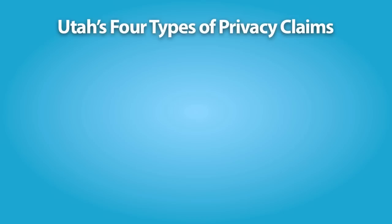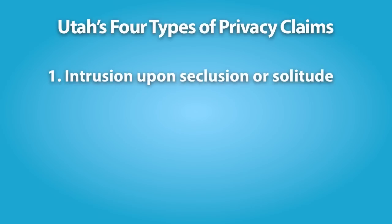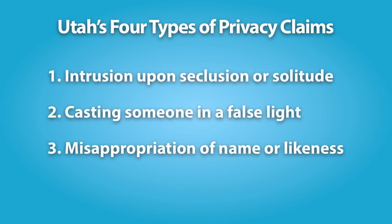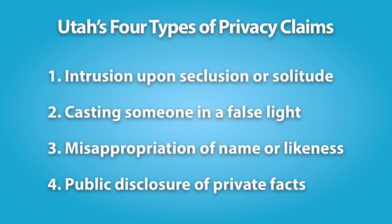In Utah, there are four different types of privacy claims recognized under the common law. They are: one, intrusion upon seclusion or solitude; two, casting someone in a false light; three, misappropriation of name or likeness; and four, public disclosure of private facts.